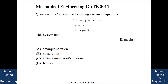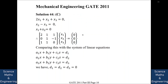Consider the system of equations: 2x₁ + x₂ + x₃ = 0; x₂ − x₃ = 0; x₁ + x₂ = 0. We need to determine whether this system has a unique solution, no solution, or an infinite number of solutions. We convert this to matrix form.